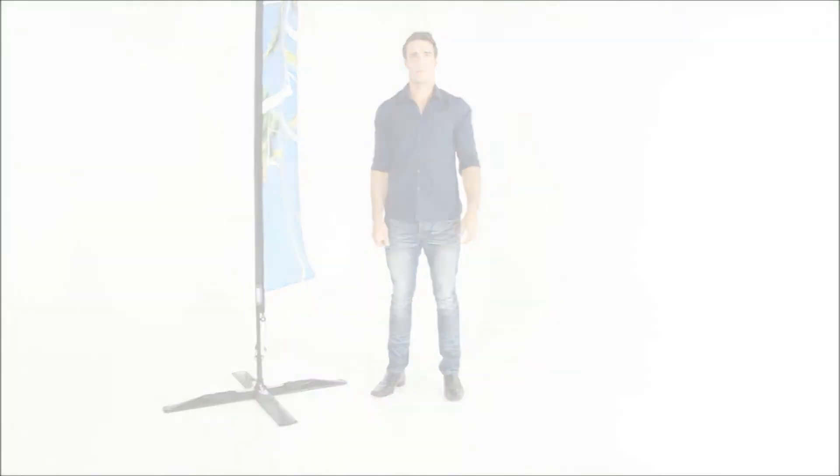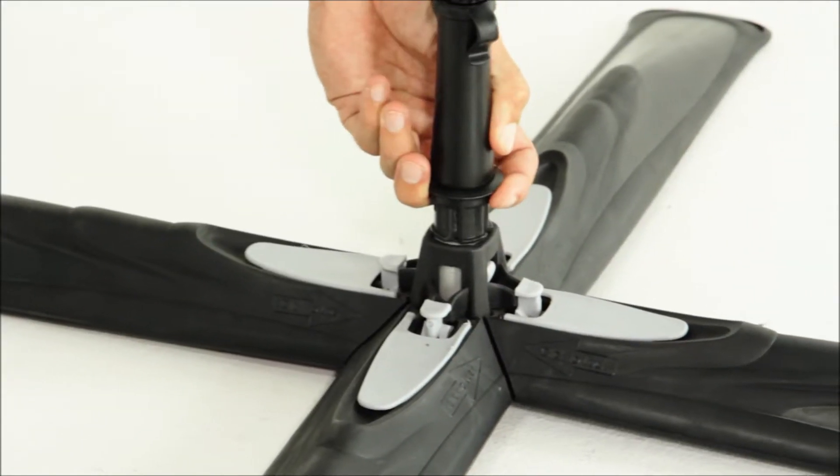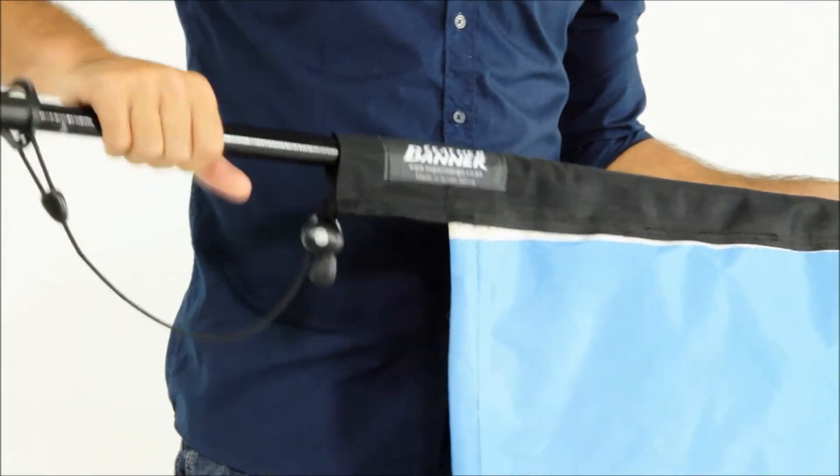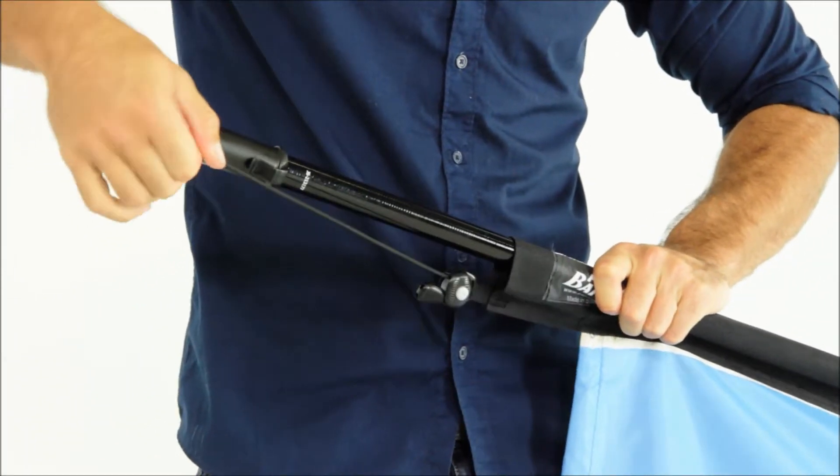To take the banner down, pull the ring up and remove the rod from the stake. Press the button on the ratchet to release the tension and unhook the cord.